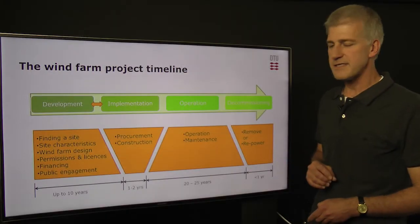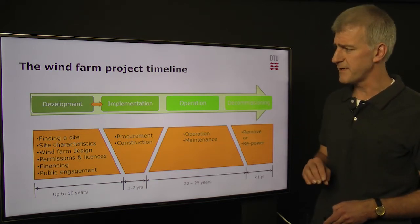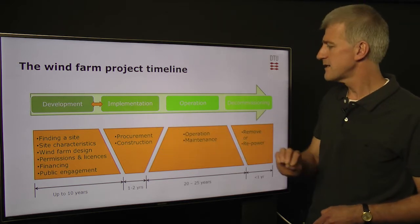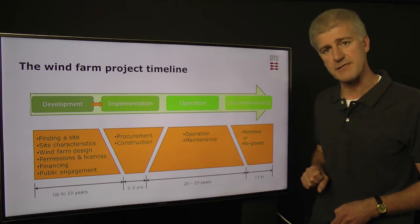So here, let's look at the timeline of a wind farm. I'll split them up into these four phases. There's the development phase, an implementation phase, an operation phase, and at last here, a decommissioning phase.